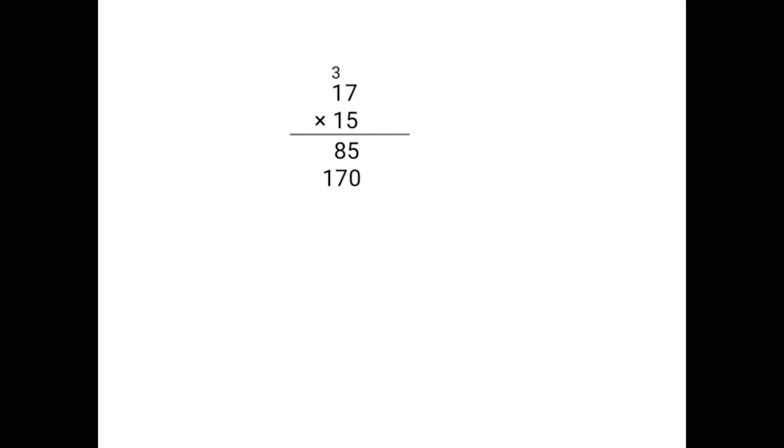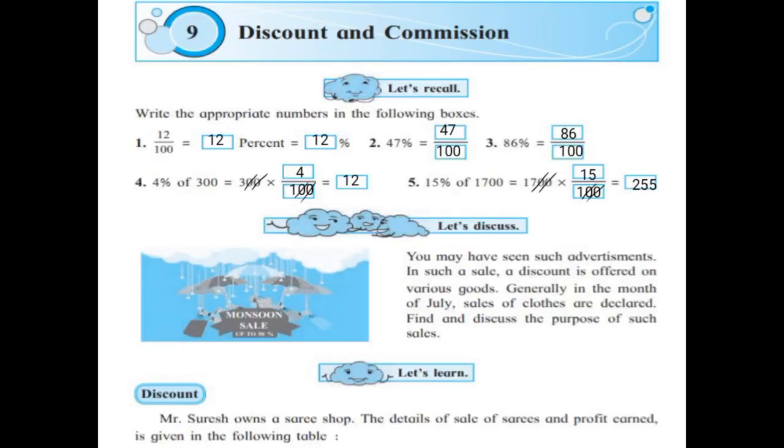Now you have to add these numbers. 5 plus 0 is 5. 8 plus 7 is 15. 1 you carry off, 5 you bring down. 1 plus 1 is 2. After multiplying 17 into 15, the answer is 255.